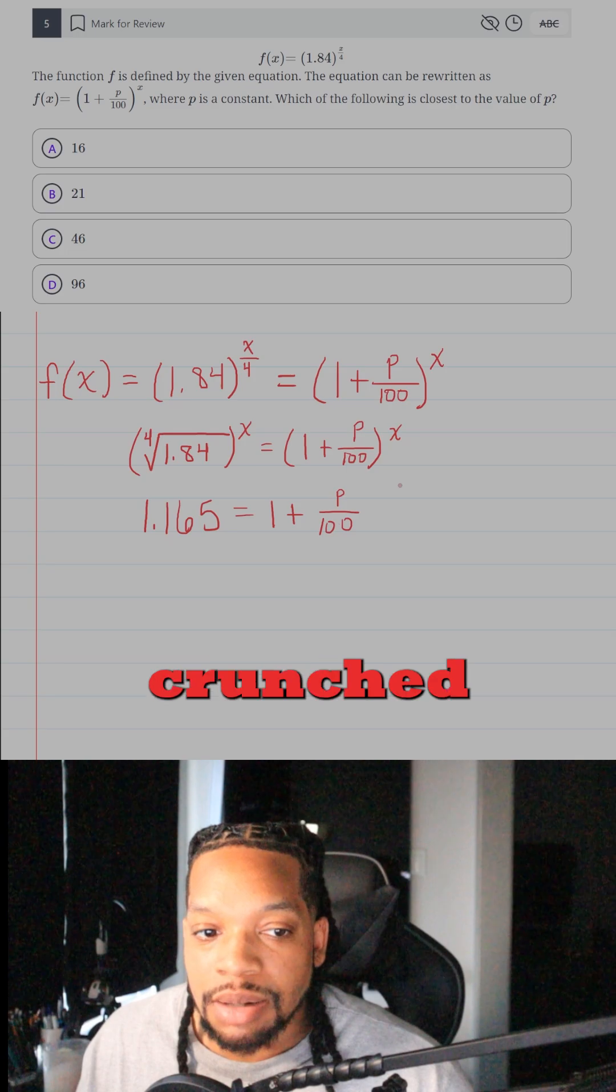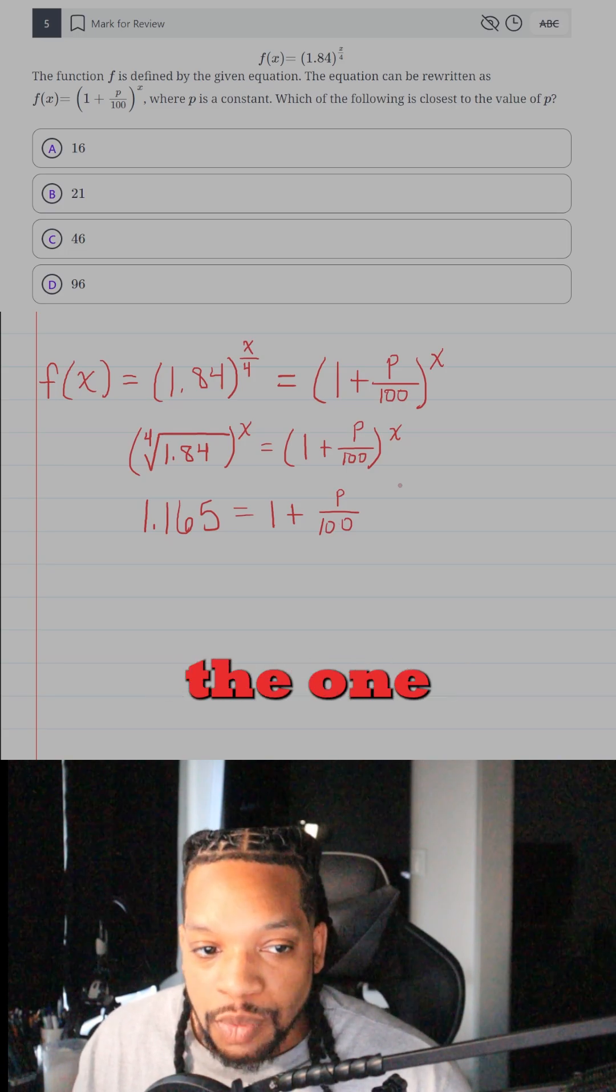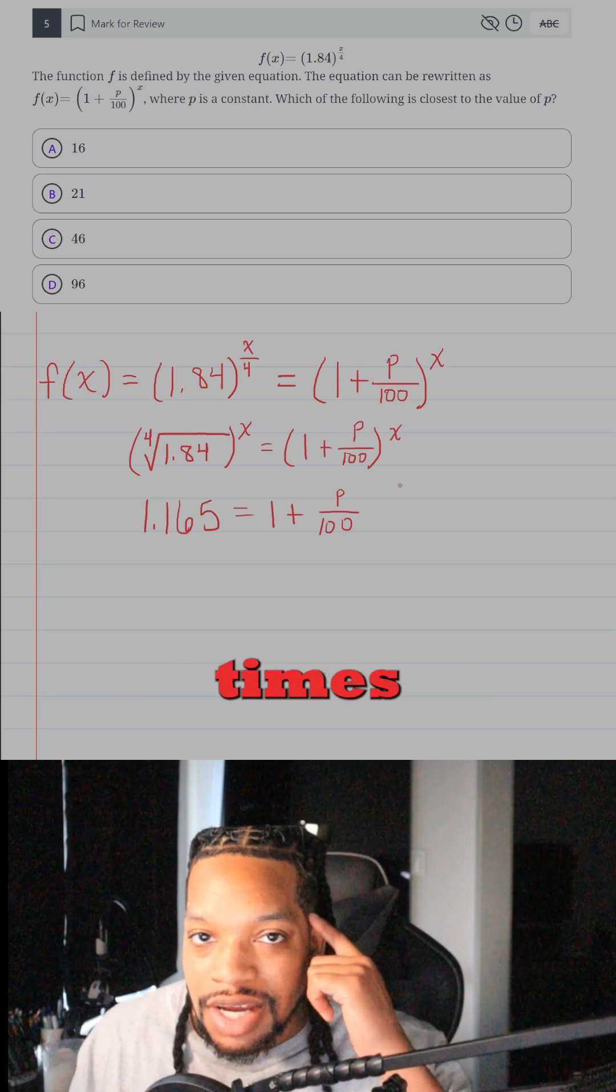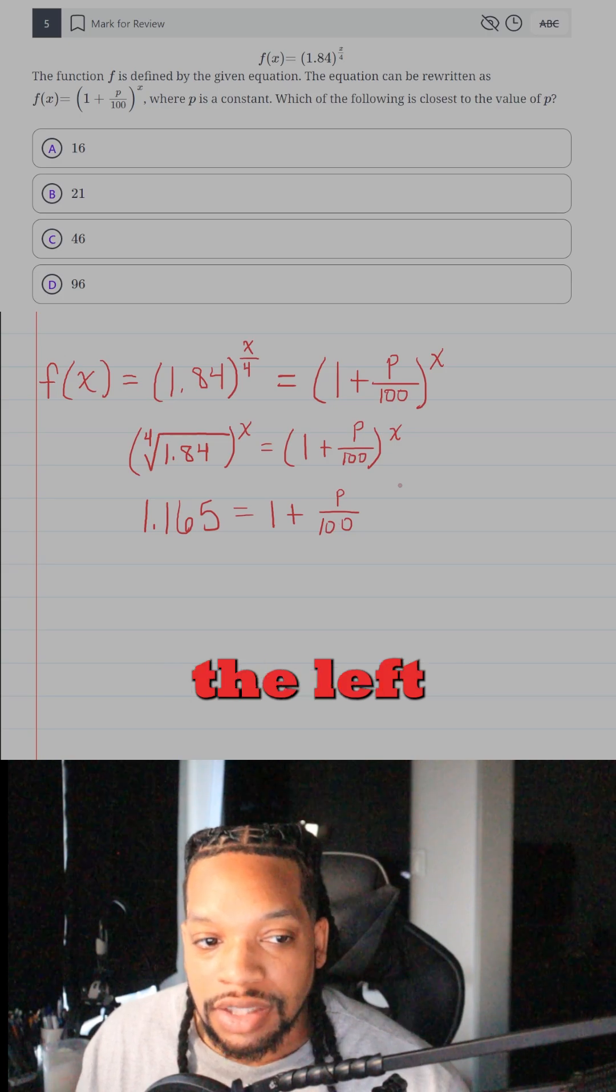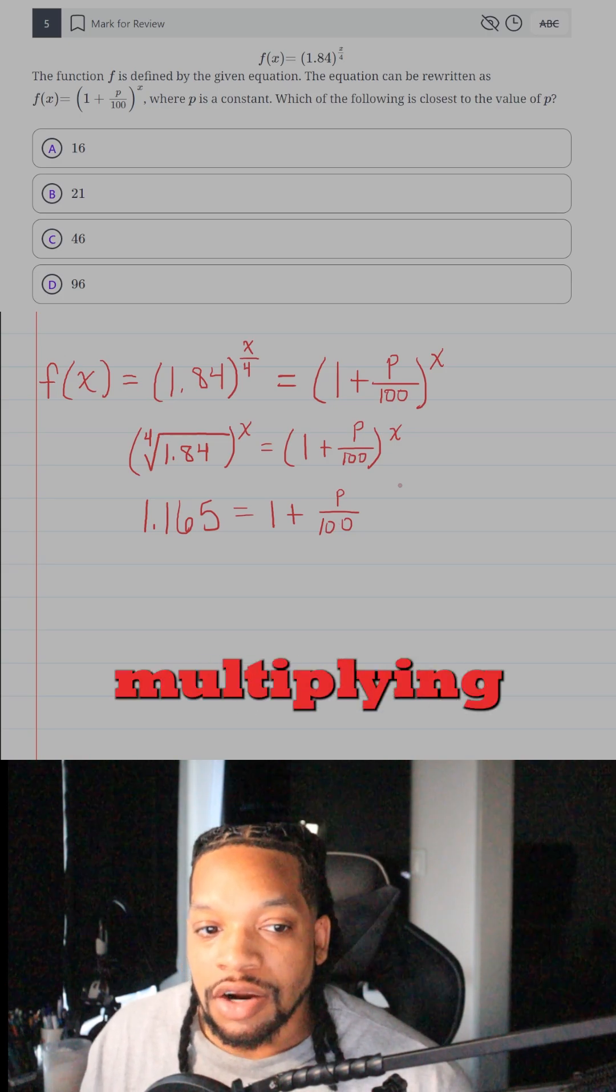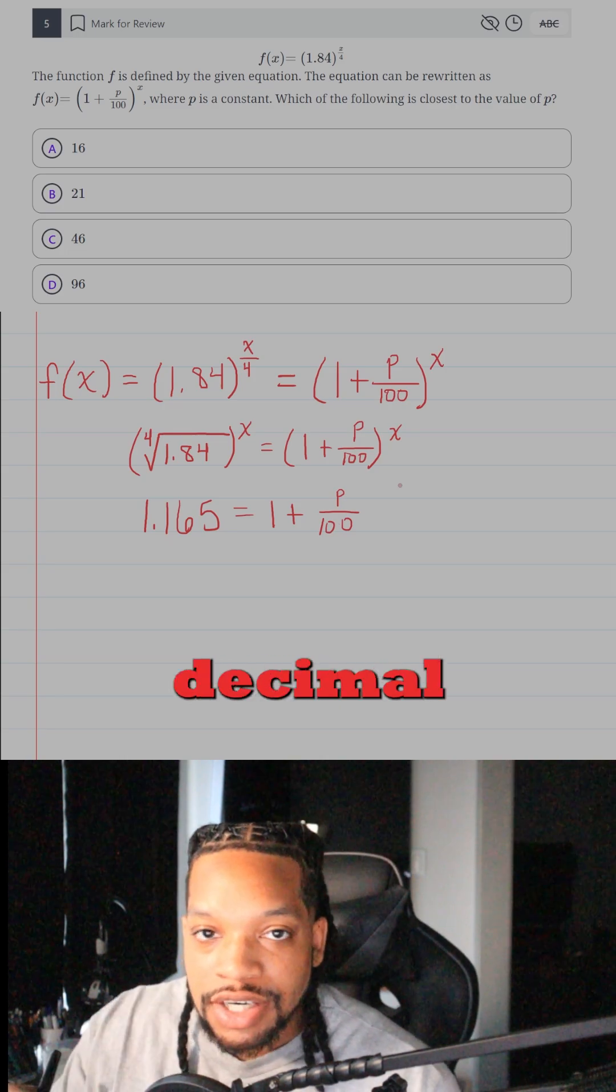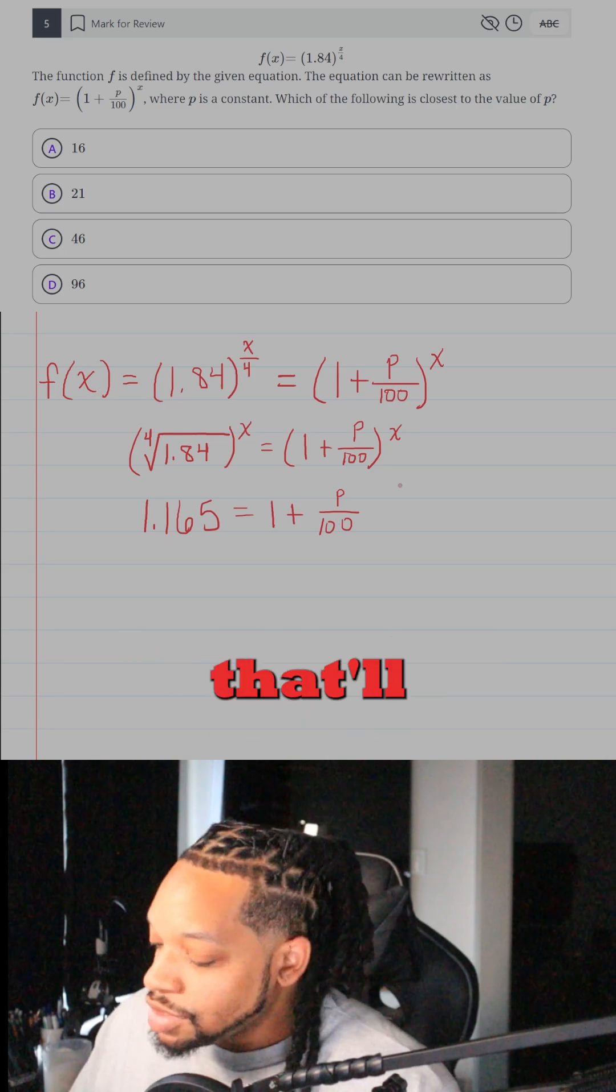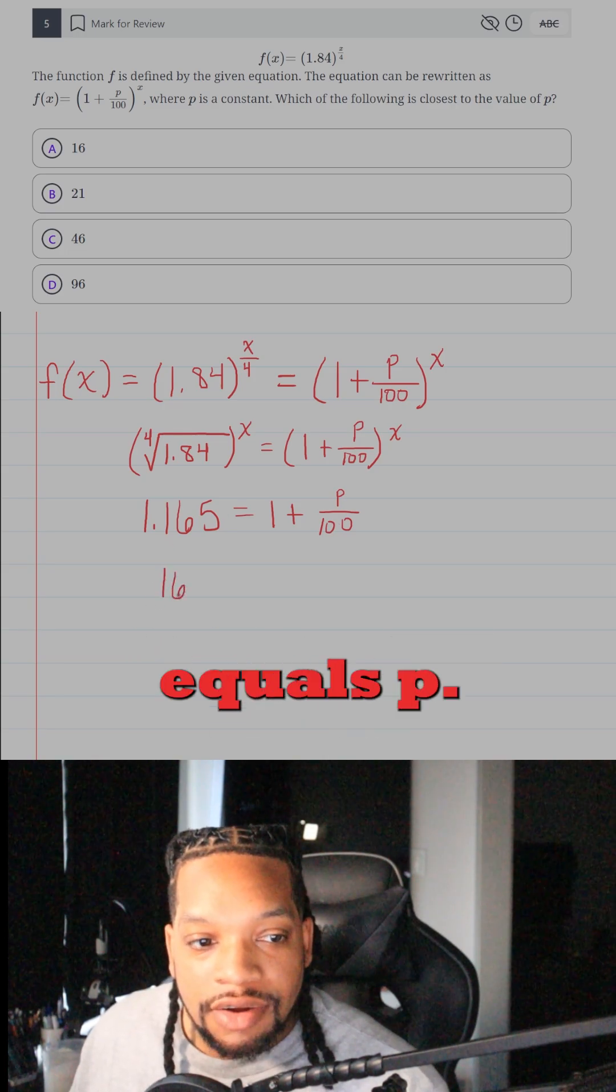And then if I'm on the SAT, I'm crunched for time. I'm just going to subtract 1 from both sides and then know that I got to times by 100. So if I subtract the left side by 1, that's 0.165. And then I know multiplying by 100 is just moving that decimal space to the right twice. So that'll give me 16.5 equals P.